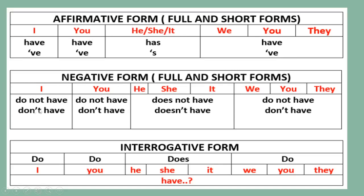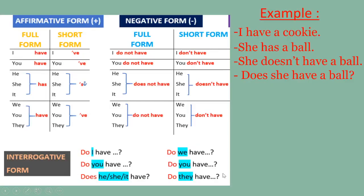For the negative form, if you use with I, you, we, or they, you need to use 'do not have', or the short form 'don't have'. If you use with he, she, or it, the full form is 'does not have' and the short form is 'doesn't have'. For the question form, you put 'do' in front followed by the subject: do I, do you, does he, does she, does it, do we, do you, do they.